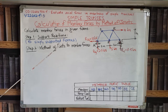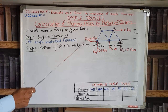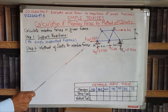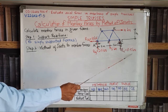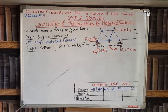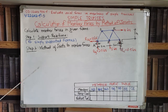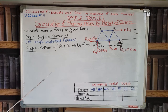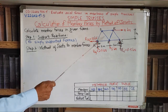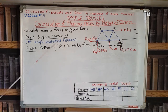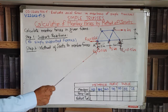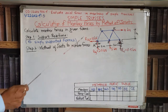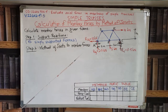In our earlier video, we have taken this complete problem of calculation of support reactions. We have seen that there are three reactions RAX, RAY and RC, and we have calculated them. So the first step is over and we move to the second step. The second step is method of joints for member forces. Our target is that we want to calculate the forces in every member of this frame. Every member of the frame is subjected to axial tension or axial compression force.